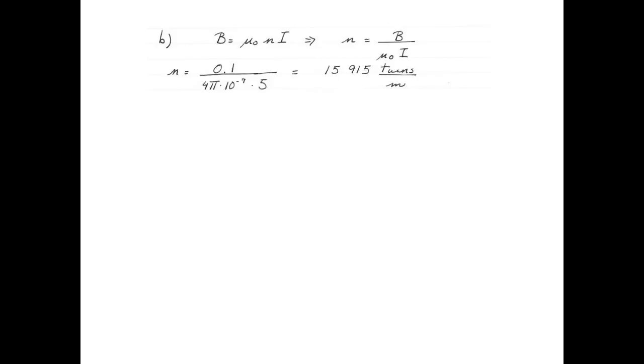Plugging the numbers in, the number of turns is equal to 0.1 tesla divided by 4 pi times 10 to the negative 7 multiplied by 5 amperes. And that gives me 15,915 turns per meter.